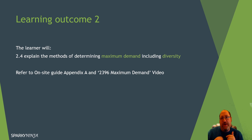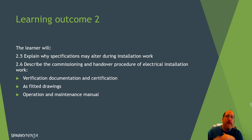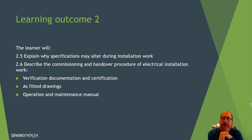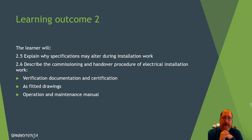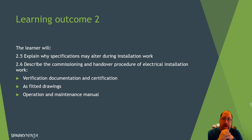Outcome 2.5: explain why specifications may alter during installation work. This is a common-sense question — no plan ever works perfectly. It could be a change of design on a client request, or a change forced by an issue with another part of the building or another contractor. There are a number of reasons why, so don't worry too much about that one. We'll probably include a part of it in the project anyway, just to give an example.